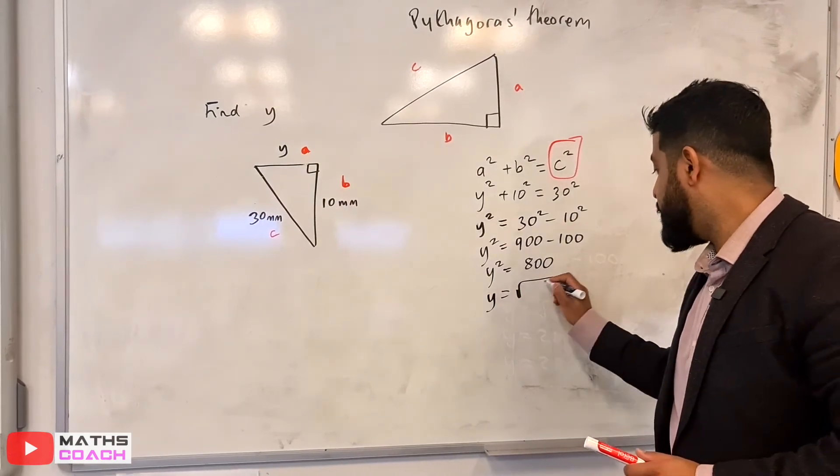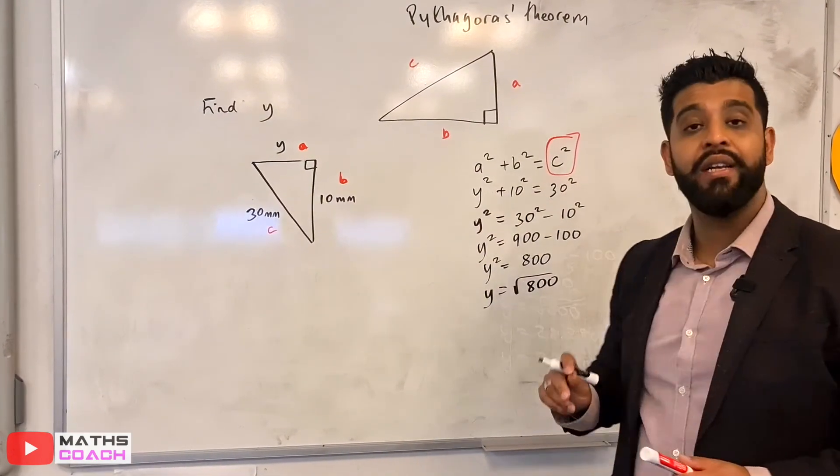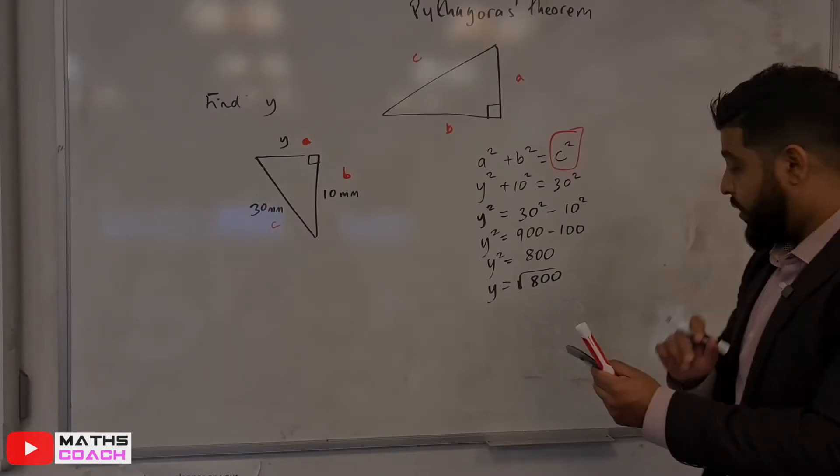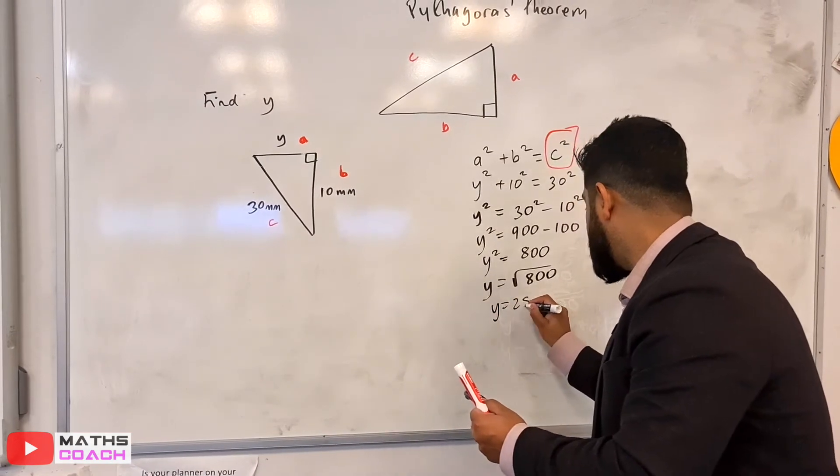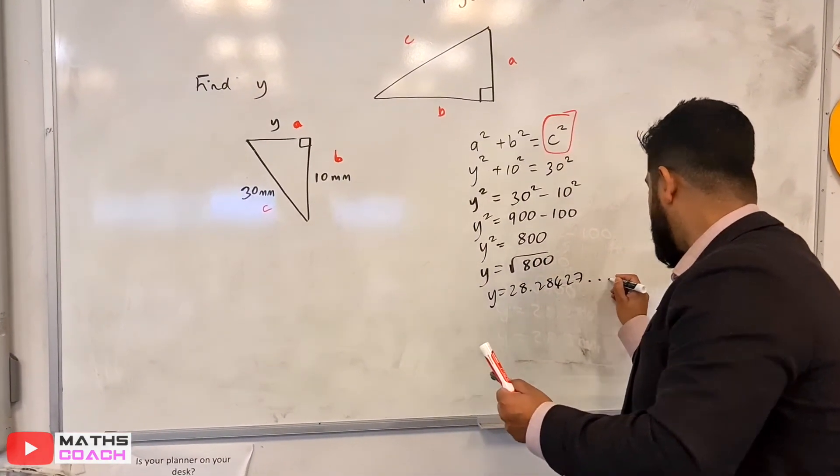Now I'm to square root this. So therefore, a square root of 800. And you could use your calculators to do this. So I'll just do that here. So I got 28.28